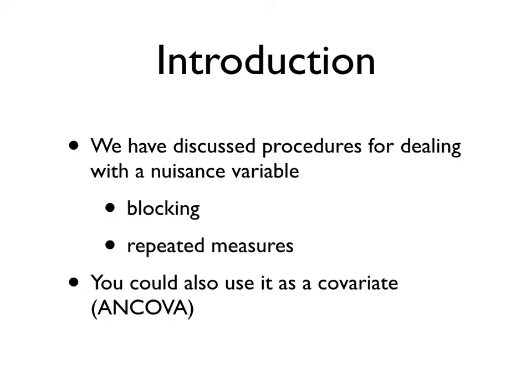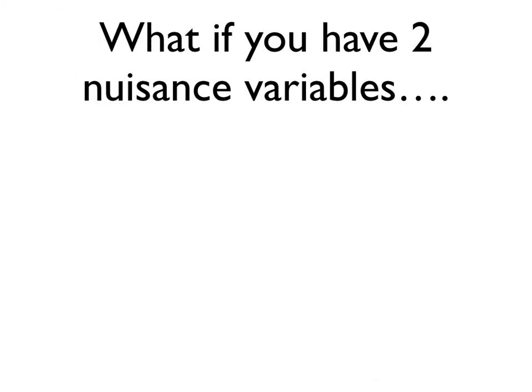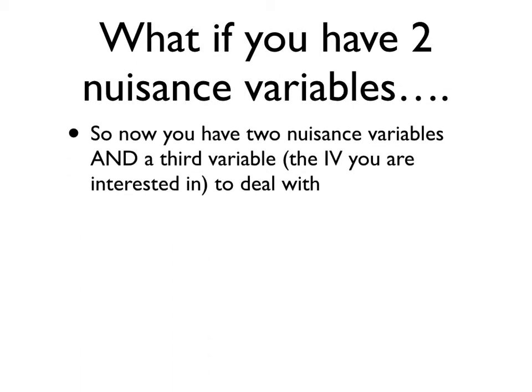You can do ANCOVA, you will learn that in graduate school. What if you have two nuisance variables? Which is something that happens, it's certainly possible. So now you have two nuisance variables and a third variable, that's your independent variable. You've got to kind of put them together.